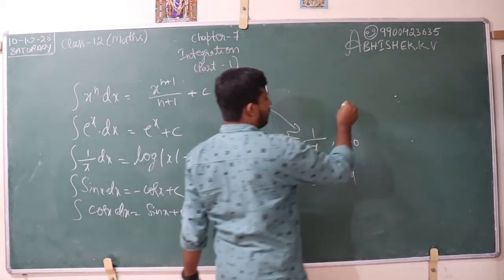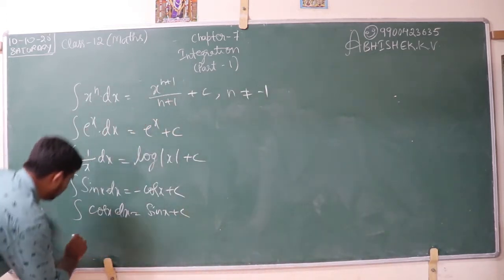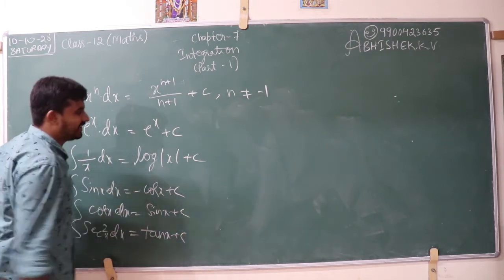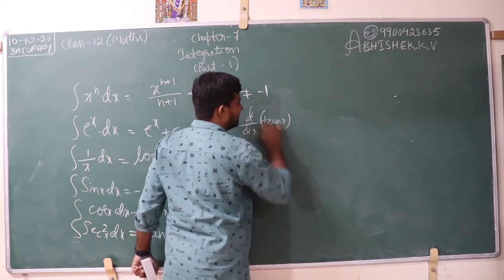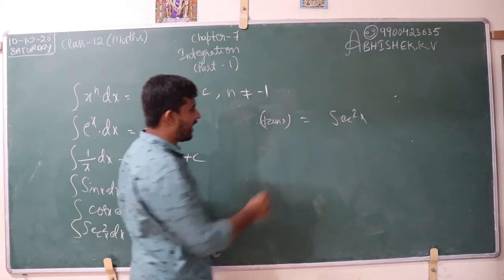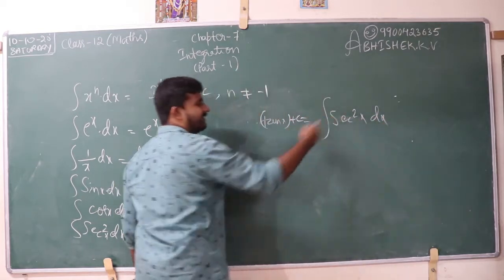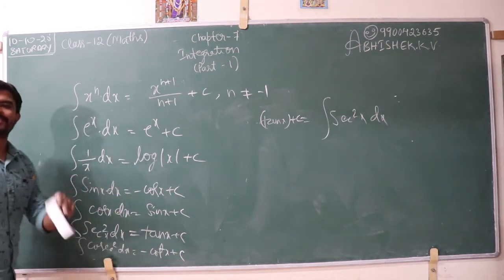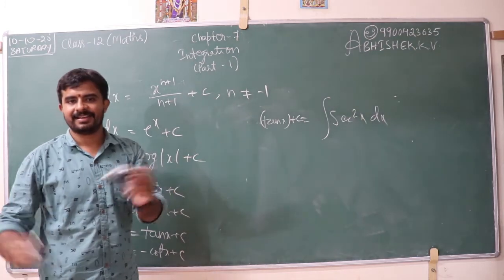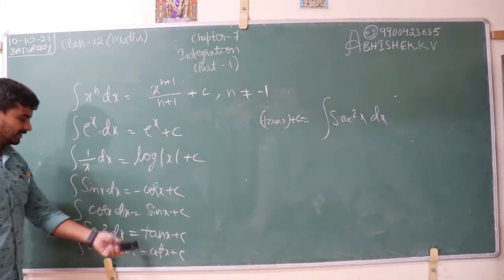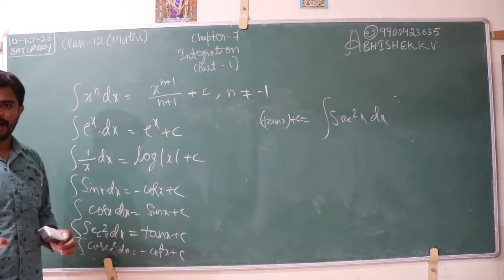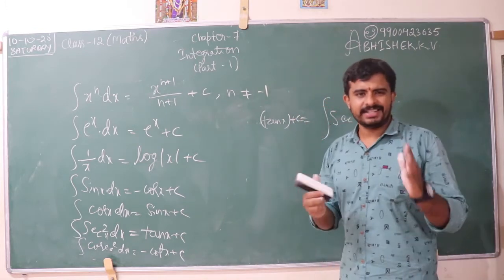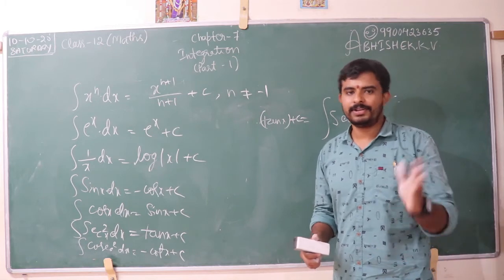Similarly, integration of secant squared x dx is tan x plus c. Why? Because the derivative of tan x is secant squared x. If I convert this to the RHS, it becomes integration with respect to x plus c. Also, integration of cosec squared x dx is minus cot x plus c, because differentiation of cot x is minus cosec squared x. If I transfer LHS to RHS, it becomes integration. I hope you are all getting the idea of how to get a result for integration — it is just the process of inverse of differentiation.